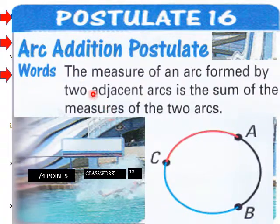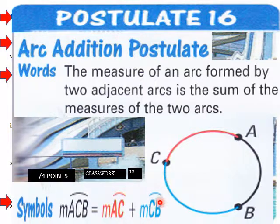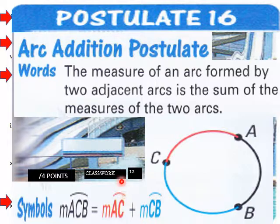Moving on to classwork page 12, Postulate 16 — the Arc Addition Postulate: the measure of an arc formed by two adjacent arcs is the sum of the measures of the two arcs. The measure of arc ACB equals the measure of arc AC plus the measure of arc CB. We use arc measure symbology to add adjacent arcs together.